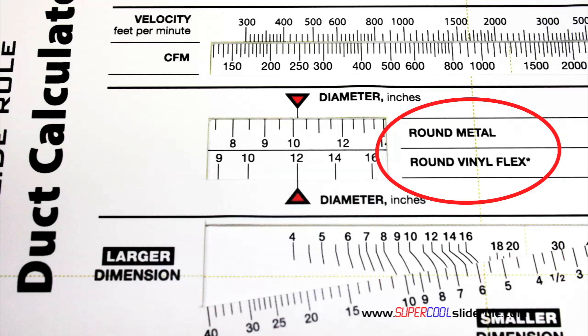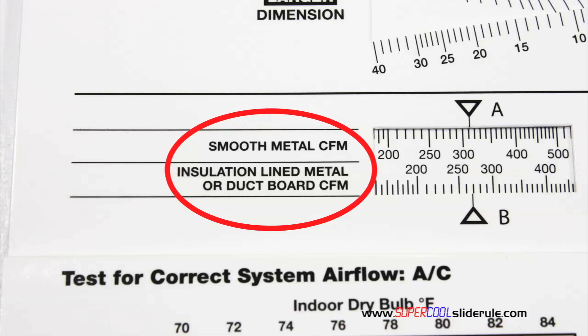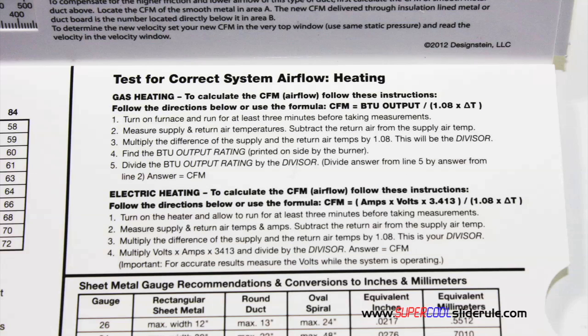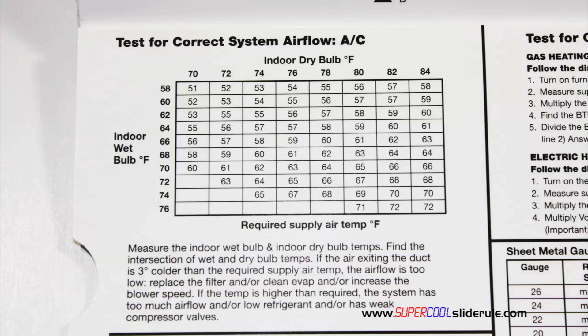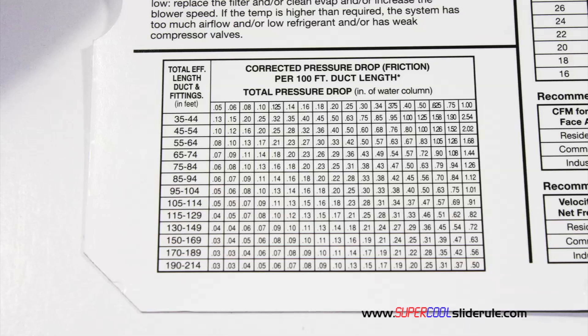Inside is packed with even more information. It performs sizing of both metal and flexible duct. It has the only direct reading conversion from smooth metal to insulation-lined metal we have ever seen. The majority of technicians have never been taught that if the insulation is on the inside of the ductwork, you cannot size it with a regular duct calculator. It has step-by-step directions for determining airflow through a gas furnace, electric furnace, or an air conditioning unit, as well as pressure drop multipliers for ductwork and recommended velocities.